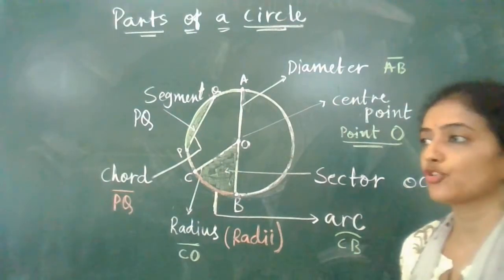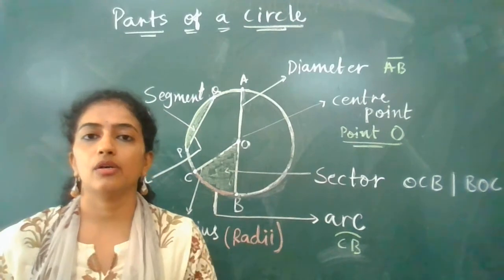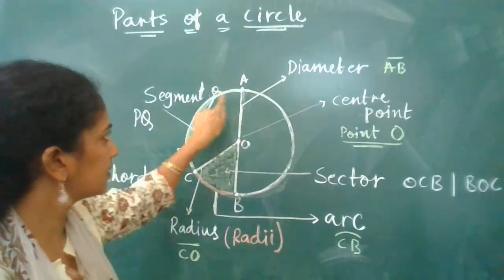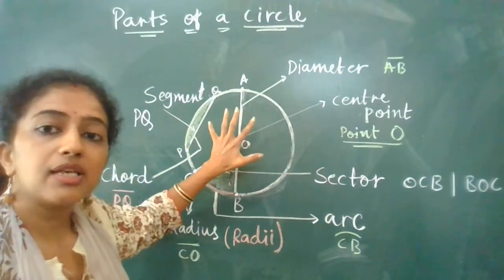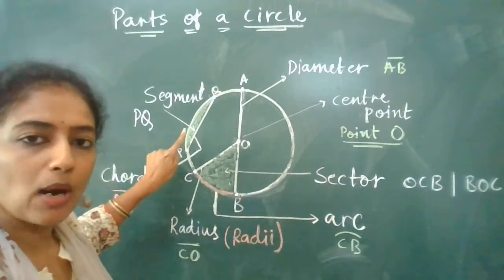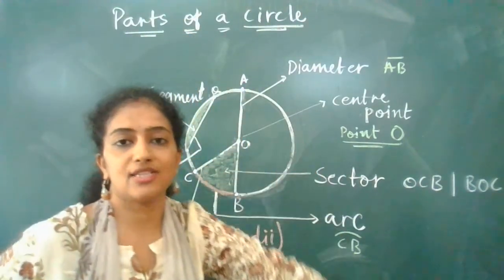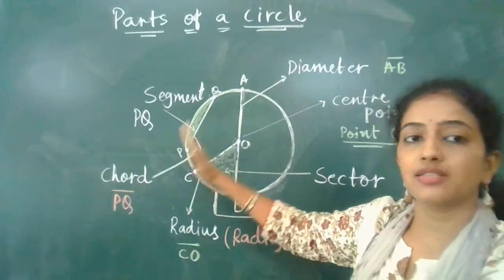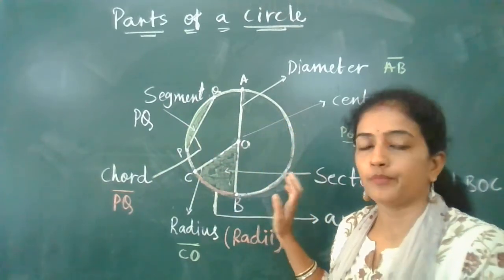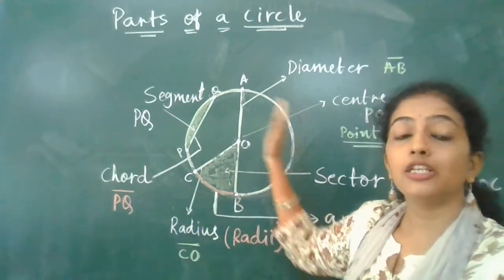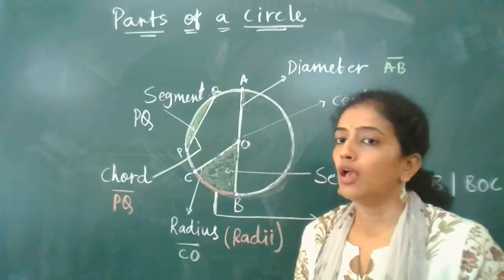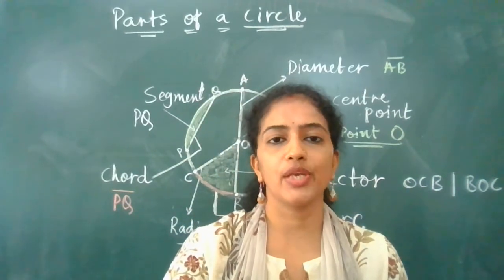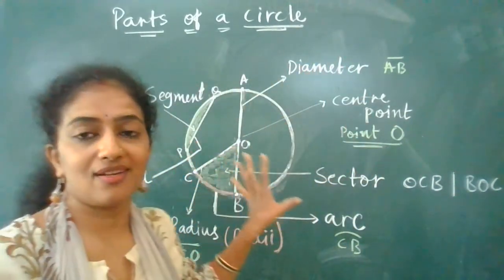With this we can also revise interior, exterior, and boundary. The interior region of the circle is inside the circumference. The circumference is called the boundary, and whatever is outside is called the exterior. Also, the diameter is a line segment which divides the circle into two equal parts, and each part is called a semicircle. With this we are completing our parts of the circle. We will continue with exercise 4.6 in our next video. Thank you, and please make sure you do this in your classwork. Bye!